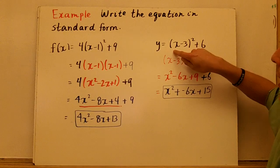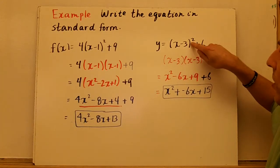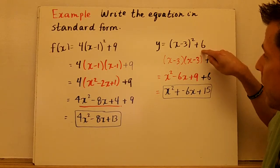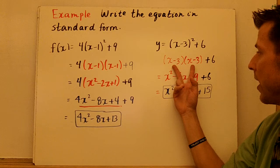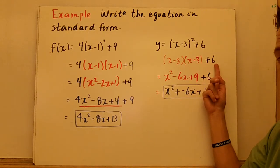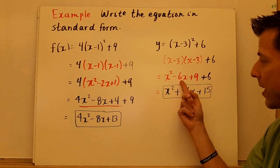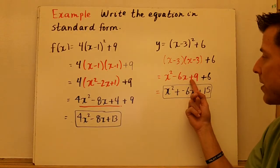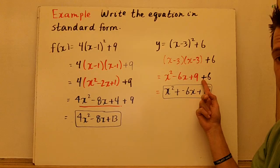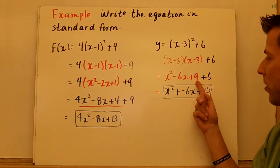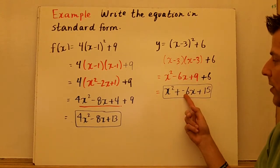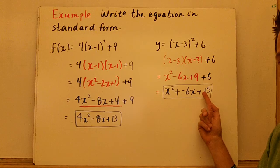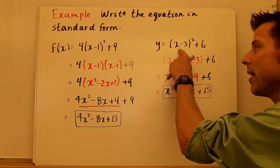Now, when we get to y equals the quantity x minus 3 squared plus 6, again, I'm going to multiply x minus 3 times x minus 3 out. And I'm going to add that 6 here. So I go ahead and do this in red. And I get x squared minus 6x plus 9 plus 6. Combining like terms, I get 9 and 6 make 15. So x squared plus negative 6x plus 15 is the standard form of that vertex form.